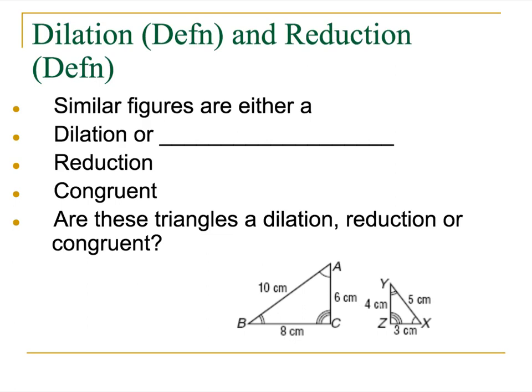Are these triangles dilation, reduction, or are they congruent? Well, if I'm talking about from ABC to XYZ, it's getting smaller, it's a reduction. If I'm talking about it from XYZ to ABC, that is a dilation. So it depends on which way you're going with it. Wonderful.